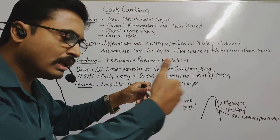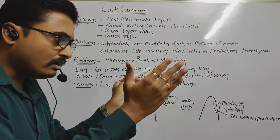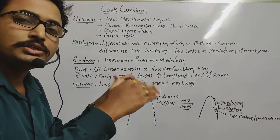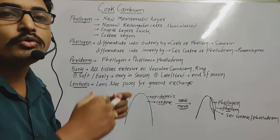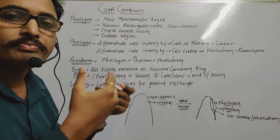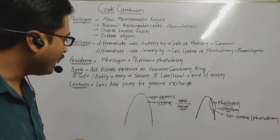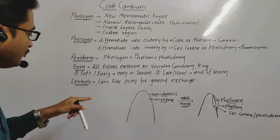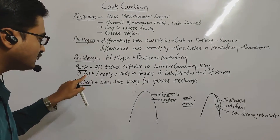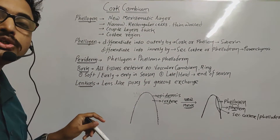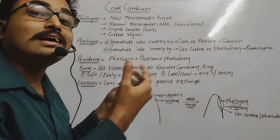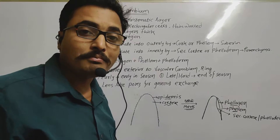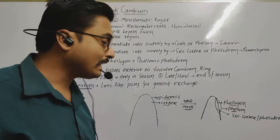The bark — which includes secondary phloem and periderm — acts as a protective layer for the plant. After the formation of bark, the next topic is the formation of lenticles.